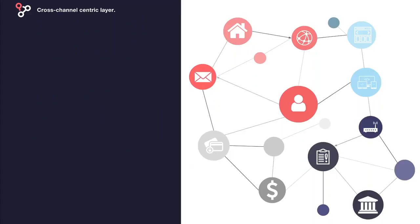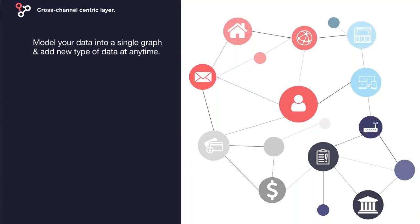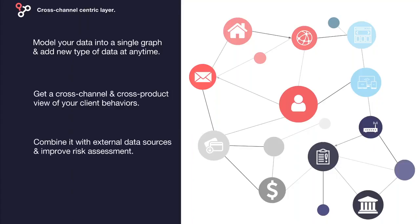With Linkurious and Neo4j, those connected analysis approaches become possible. Graph technologies can support analytic processes traversing all your data to find anomalies in millions of records. The technology allows you to model all your data into one single graph and add new types of data at any time. It is then very easy to get a cross-channel and cross-product view of your clients' behavior, and you can easily combine it with external and third-party data sources to improve risk assessment. Transactions that initially looked innocent may reveal as suspicious when correlated with activities in different areas.